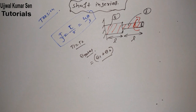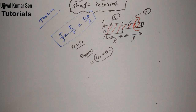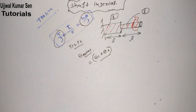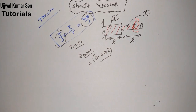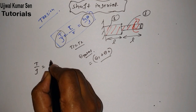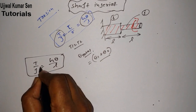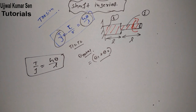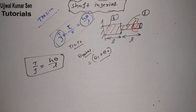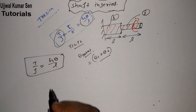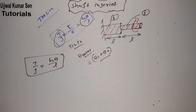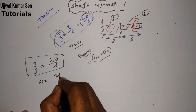Now from the torsion equation we can interrelate things: T/J = Gθ/L. Simplifying this to find θ, we do cross multiplication and get θ = TL / (JG).